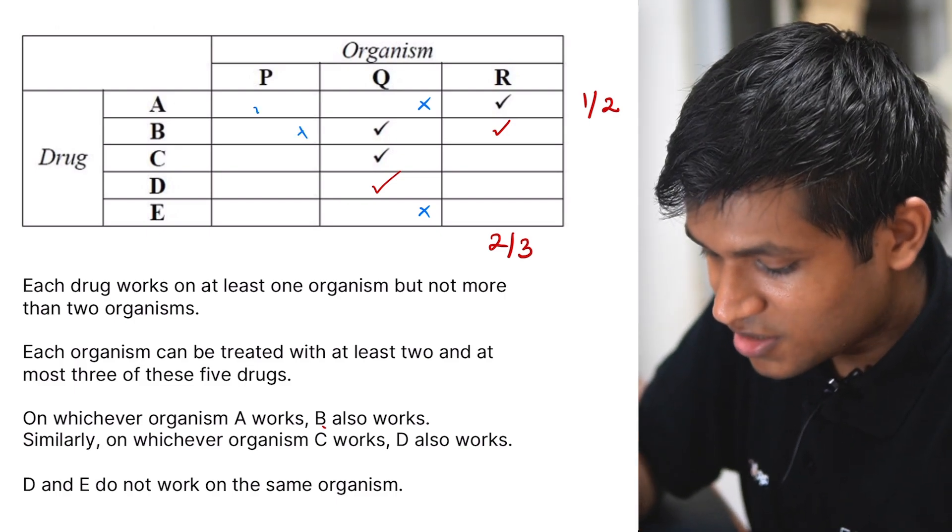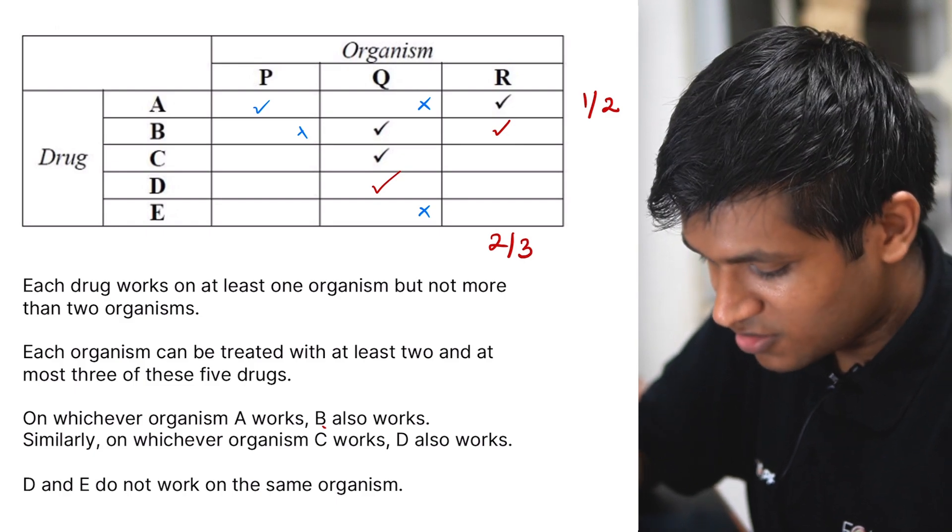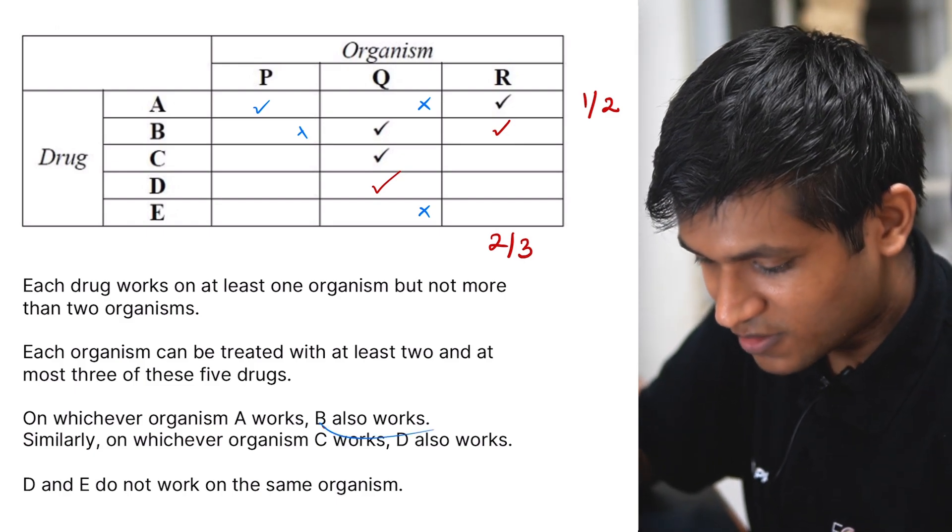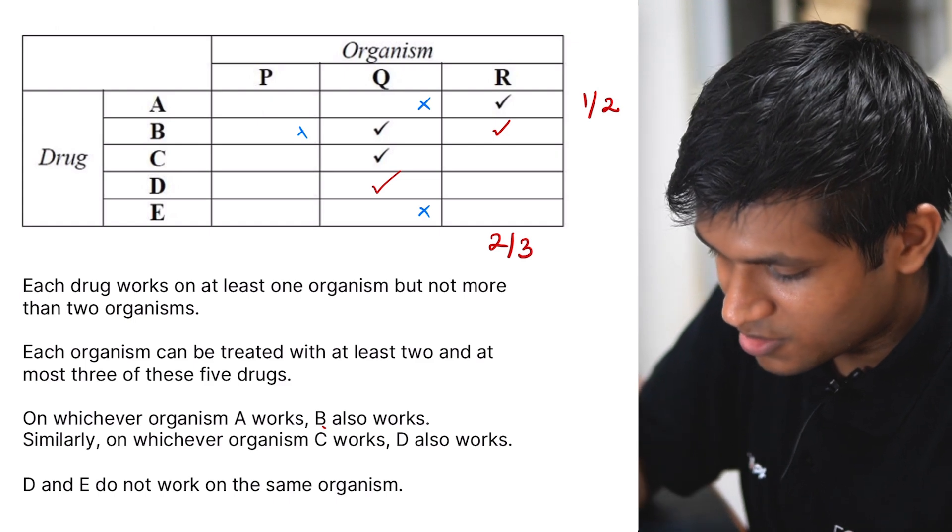Can I have a tick in A? If I have a tick in A, that means B should also work. But B is not working. So I cannot have a tick in A. So it will be a no.